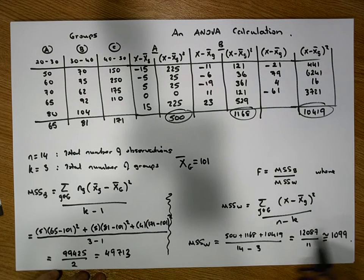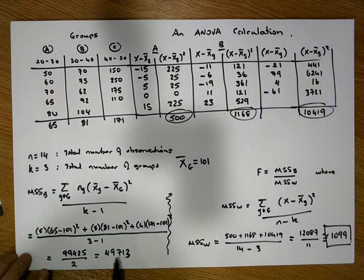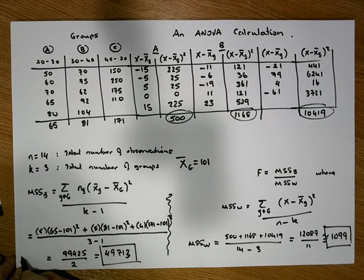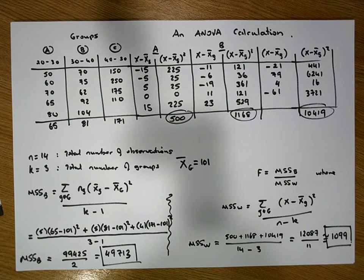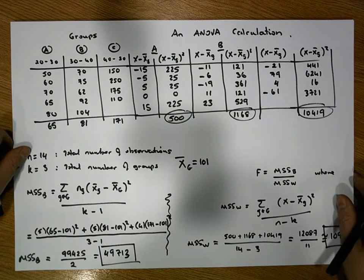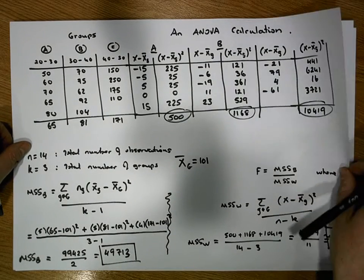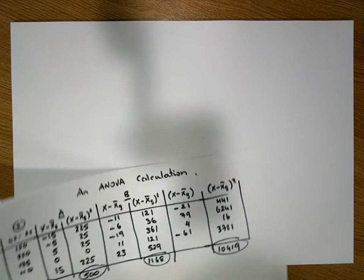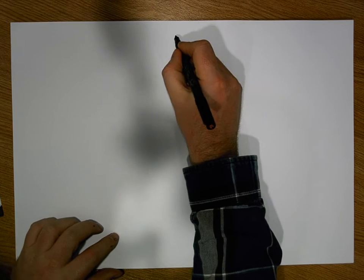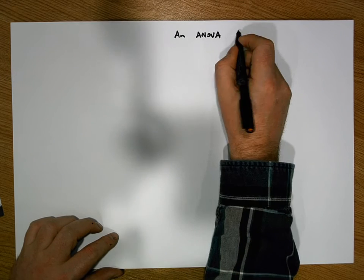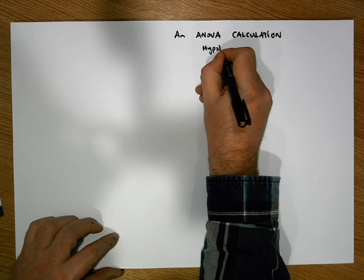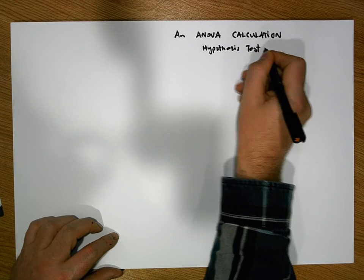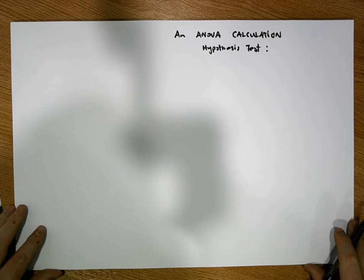So now we have our two main measures: our mean sum of squares within measure and our mean sum of squares between measure. We have everything required for our test statistic, so now it's time to undertake the hypothesis test. There was a lot in that calculation but we're nearly there. We're doing an ANOVA calculation and now we're doing the hypothesis test.